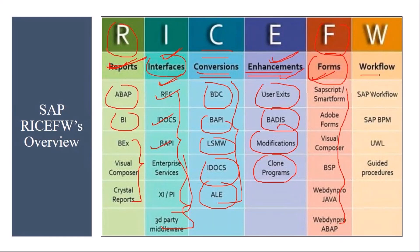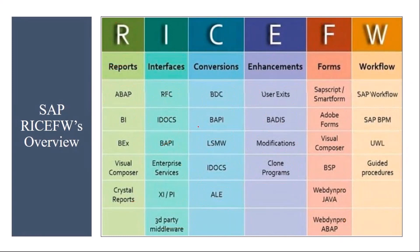W means Workflow. Workflow means sending data from one person to another person in the organization at a hierarchy level. We will see all these things in detail.